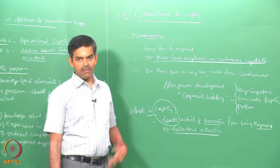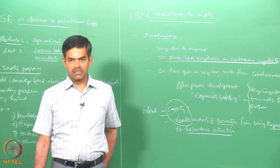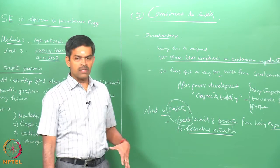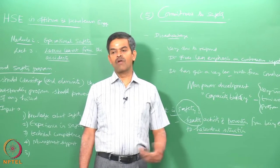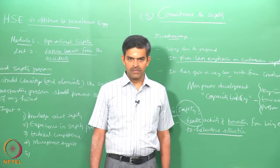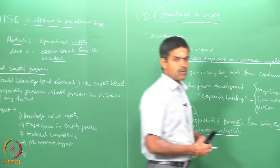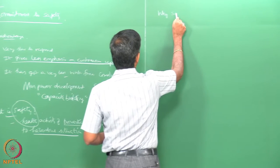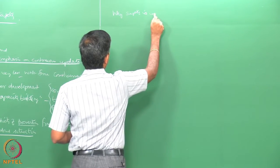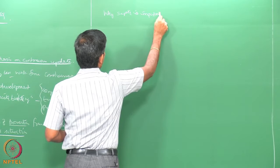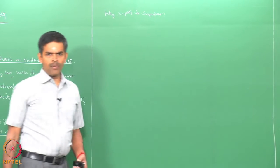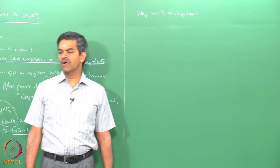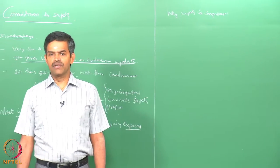By remaining safe, disaster consequences can be avoided, thereby saving human life, plant, and the environment where the industry is located. Safety is important because naturally any living creature around the world prefers to be safer rather than risking their life under unfavorable conditions.